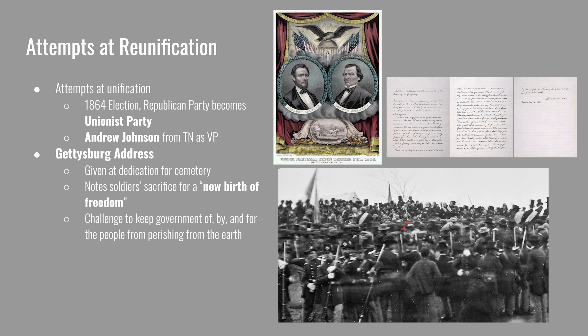The first attempt at unification was in the 1864 election. The Republican Party temporarily changed its name to the National Union Party. Lincoln replaced his vice president with Andrew Johnson, a Democrat loyal to the Union from Tennessee, chosen to garner more support. Lincoln was being challenged for the presidency by General George McClellan, who had not been happy about being fired as General of the Army of the Potomac and became a vocal opponent of Lincoln. In 1864, Lincoln won the election, partly due to military victories earlier that year and partly due to support from Union soldiers who voted through absentee ballots for the very first time.